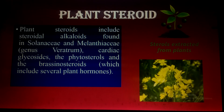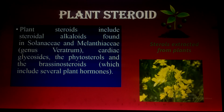Plant steroids include steroidal alkaloids found in Solanaceae and Melanthaceae, cardiac glycosides, phytosterols, and brassinosteroids. Brassinosteroids are derived from Brassica, which is why they are known as brassinosteroids. These are examples of steroids derived from plants, including brassinosteroids and cardiac glycosides.